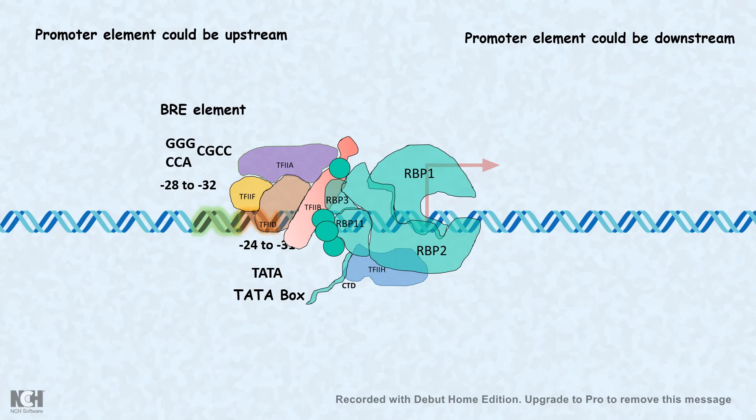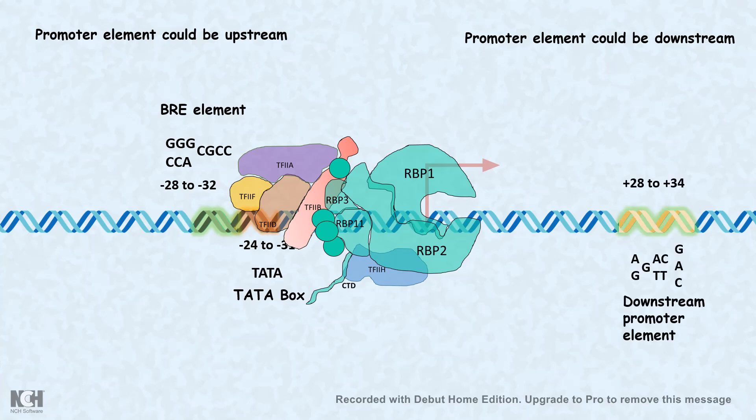We can also talk about downstream promoter elements such as DPE, which are mostly present at positive 28 to 34 nucleotides downstream from the transcription start site.